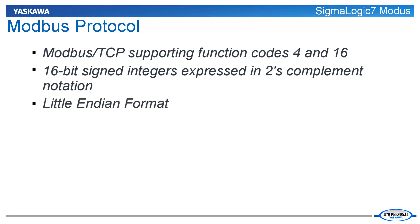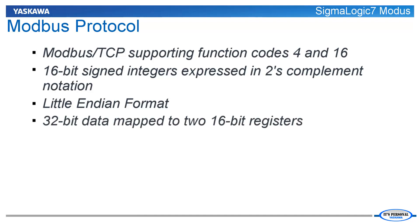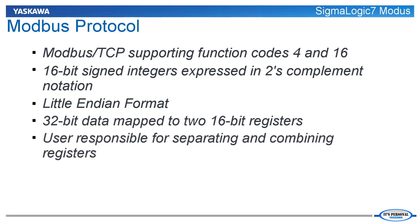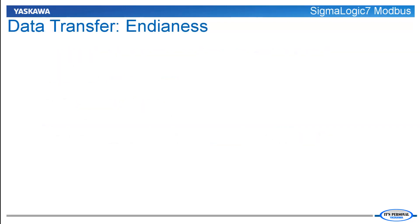Some data, such as position and speed feedback, is too large to be contained in a single 16-bit register and therefore is mapped into two consecutive registers. The user is responsible for separating and combining these registers as required. An important data transfer concept that must be addressed is the issue of data storage by CPUs.